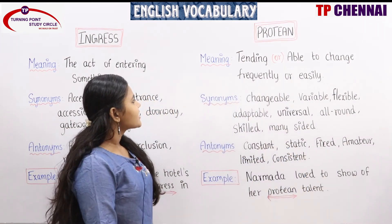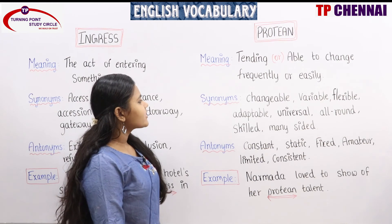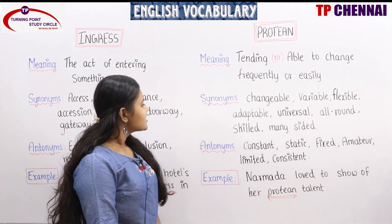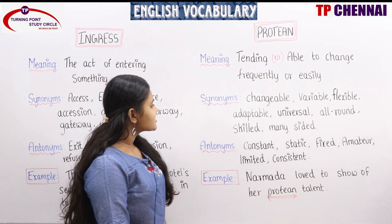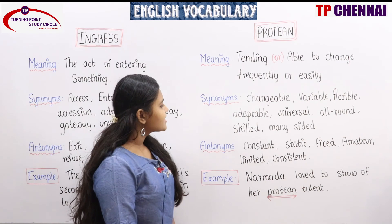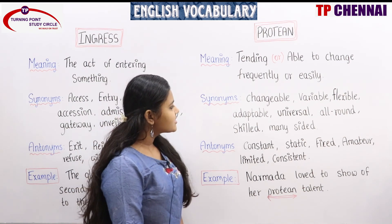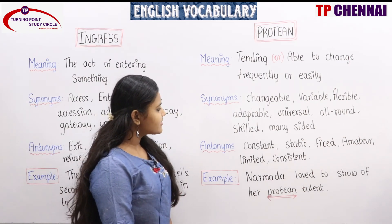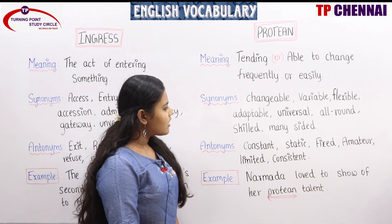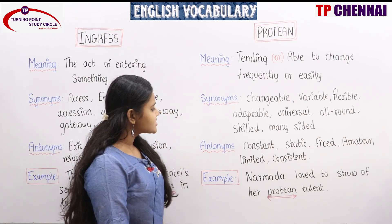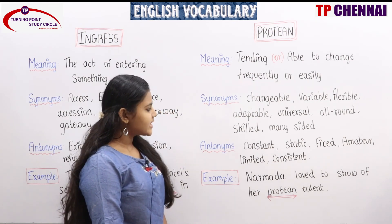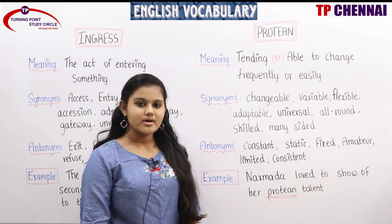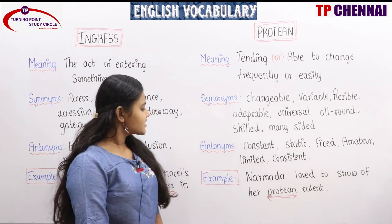Protean. P-R-O-T-E-A-N. Protean: tending or able to change frequently or easily. Synonyms: changeable, variable, flexible, adaptable, universal, all-round, skilled, many-sided. All these words can be related to synonyms.